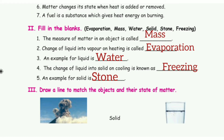Fill in the blanks. 1. The measure of matter in an object is called blank. The answer is mass. 2. Change of liquid into vapor on heating is called blank. The answer is evaporation. 3. An example for liquid is blank.